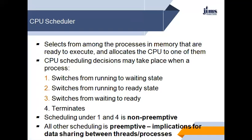All other scheduling is preemptive, with implications for data sharing between threads and processes. Condition 1 is when a process switches from the running state to a waiting state, such as for an input-output request or invocation of a wait system call. Condition 2 is switching from running to ready state, for example in response to an interrupt. Condition 3 is switching from waiting to ready, at completion of input-output. Condition 4 is when a process terminates.